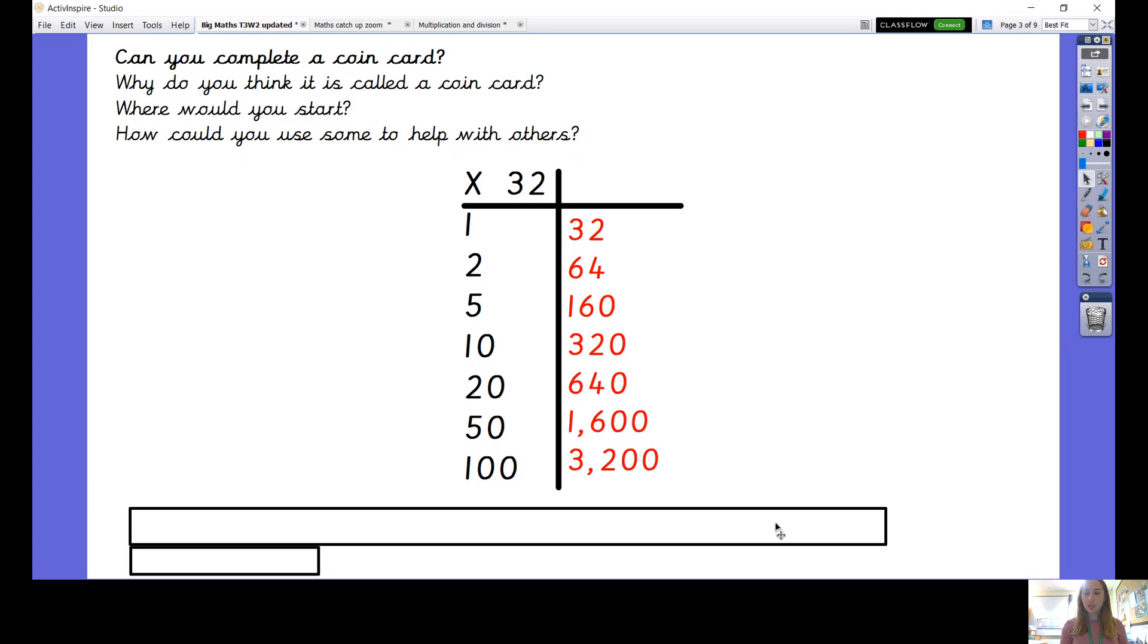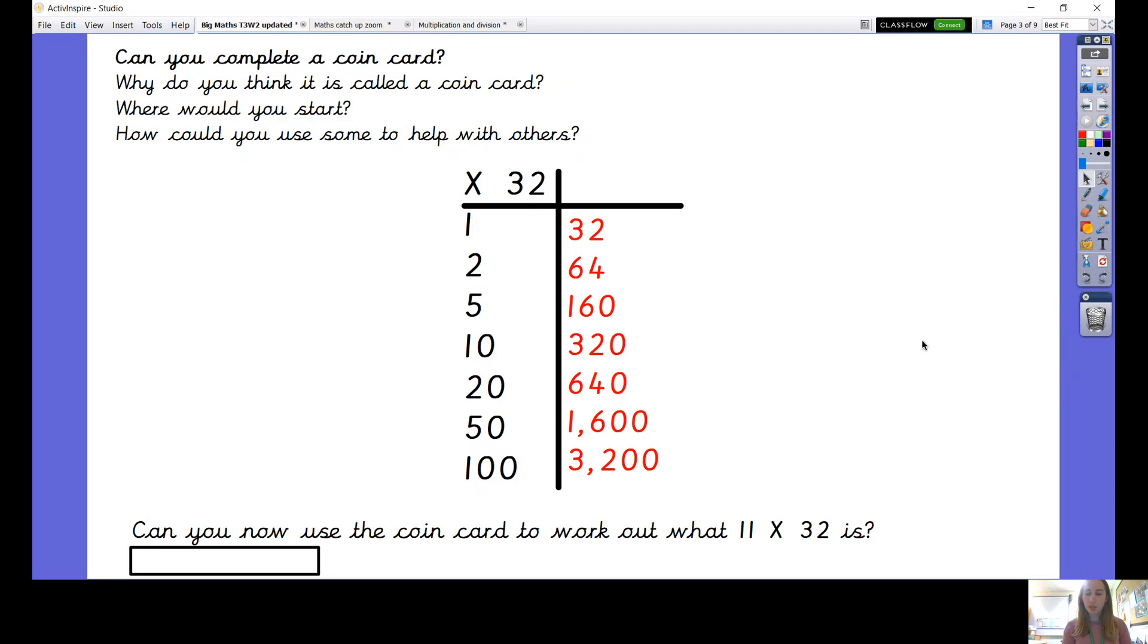Now I've done that coin card I can use it to help me solve some mental multiplications. So the question says can you now use the coin card to work out what 11 multiplied by 32 is. Look at the coin card and think about which facts would help you with 11 multiplied by 32. I personally would use 10 times 32 and 1 times 32 to make 11 times 32. So I know 10 times 32 is 320 and 1 times 32 is 32 so I can add those together to find out what 11 multiplied by 32 is. 11 multiplied by 32 is 352.